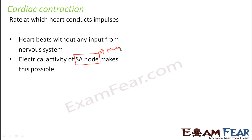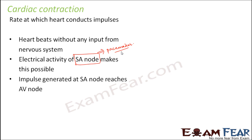That is why it is known as the pacemaker. It is due to the presence of this SA node that there is no dependency on the nervous system for the automatic beating of the heart. Now the impulse which is generated at the SA node reaches the AV node. The SA node is present in the auricles, so from the auricle it reaches the lower side of the auricle where the AV node is present. Once it reaches the AV node, there is a delay involved — it takes some time to travel from the SA node to the AV node.